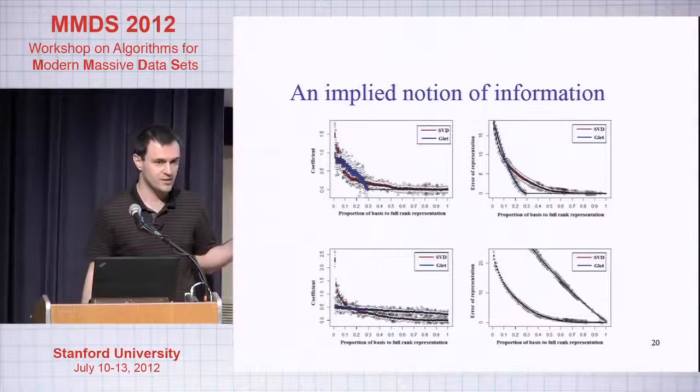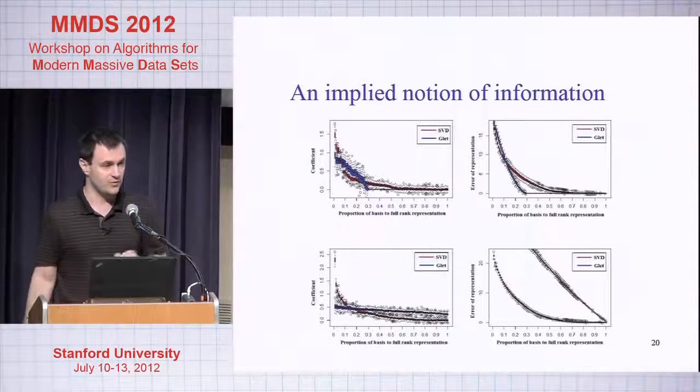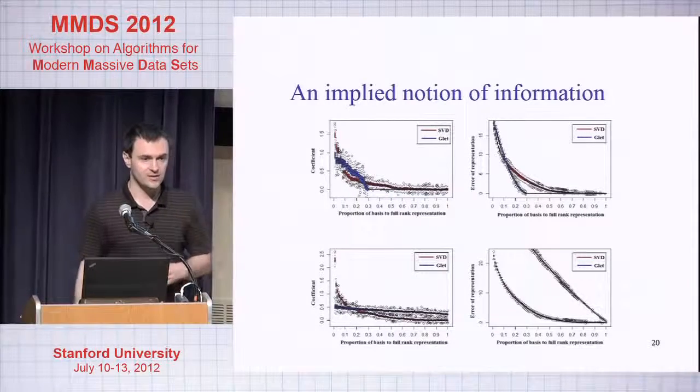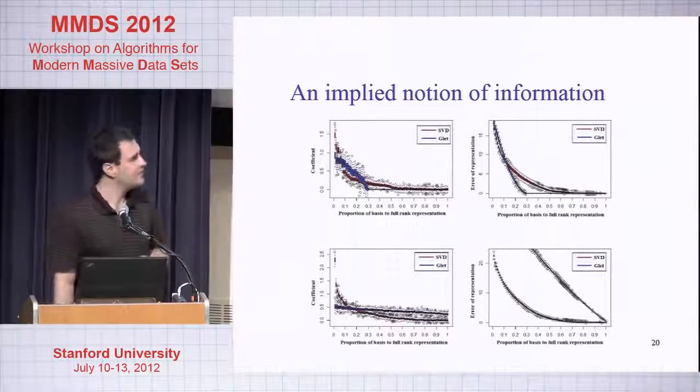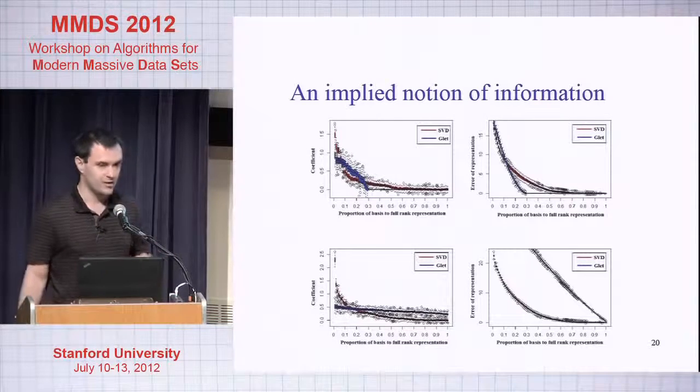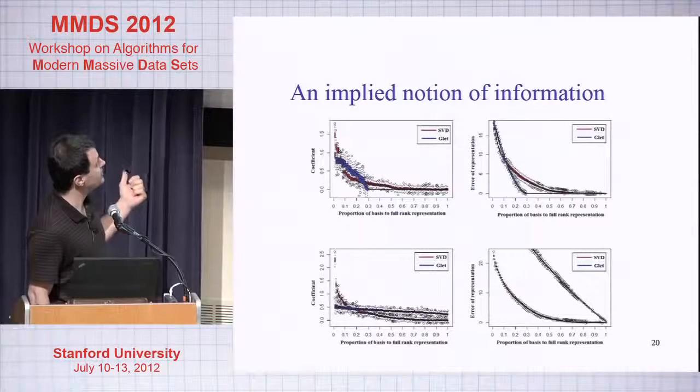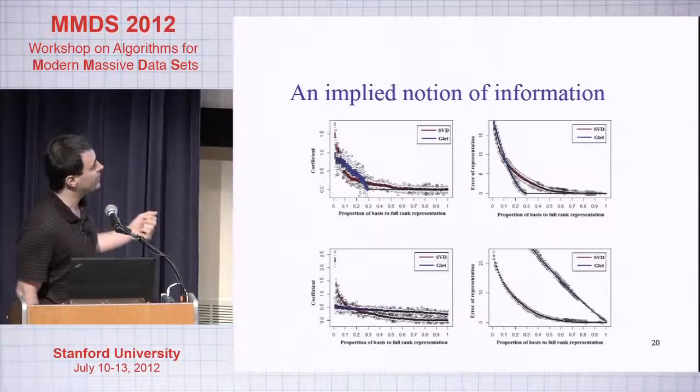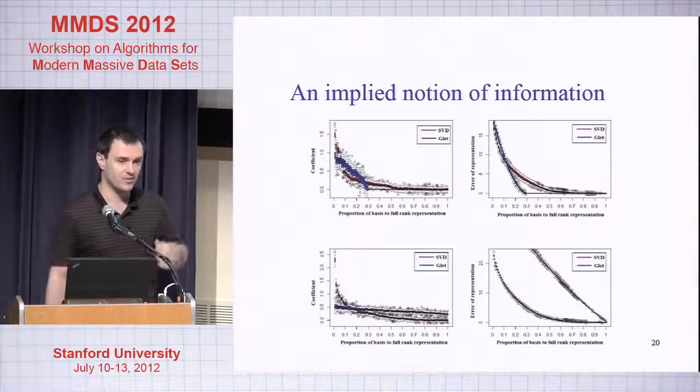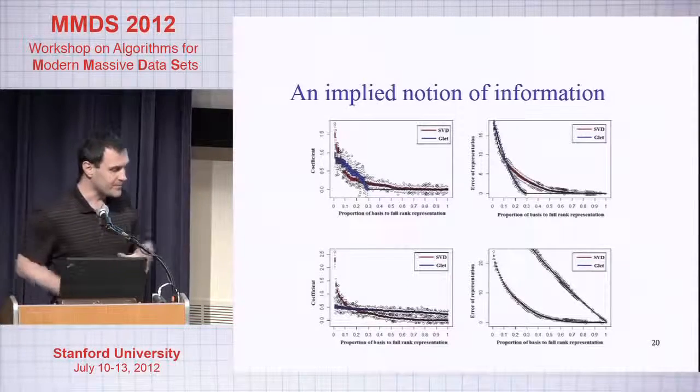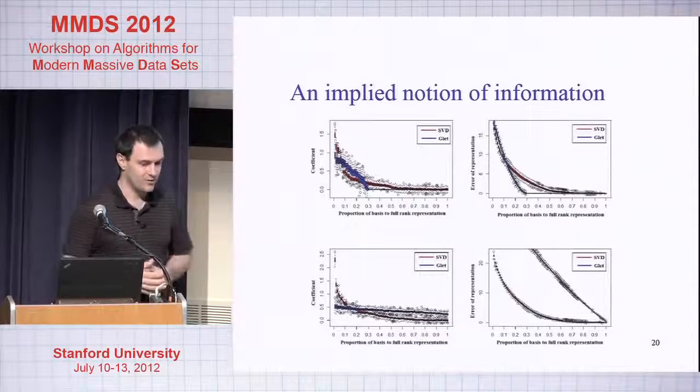These are two simulations. What we did is we're comparing the singular value decomposition of a weighted adjacency matrix with the Graphlet decomposition of a weighted adjacency matrix. We are doing that on two sets of graphs: one is a real blocky graph and one is an Erdos-Renyi random graph. On the left hand side I'm showing you the coefficients, and on the right hand side I'm showing you the reconstruction error.